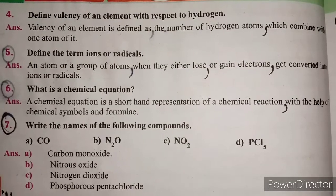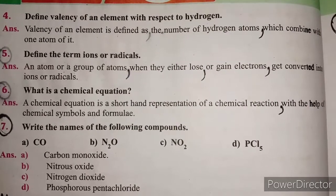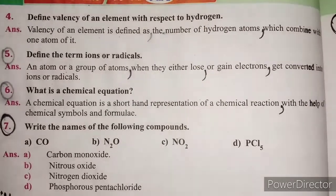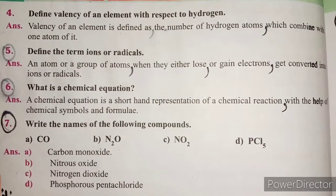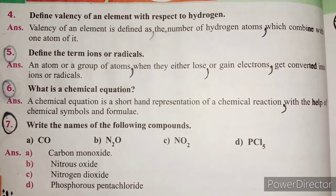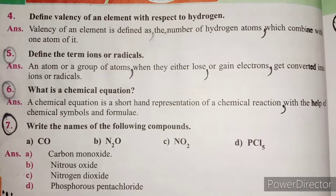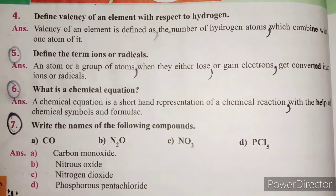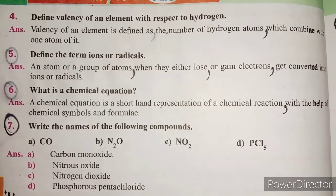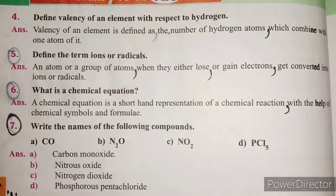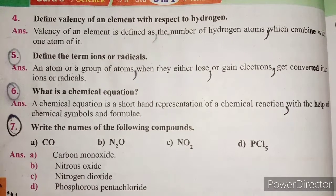Question 7: Write the names of the following compounds. CO: Carbon monoxide. N2O: Nitrous oxide. NO2: Nitrogen dioxide. PCl5: Phosphorus pentachloride.